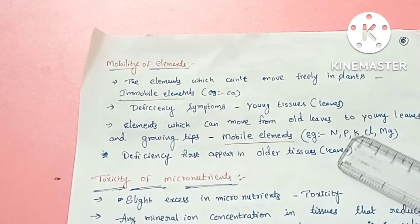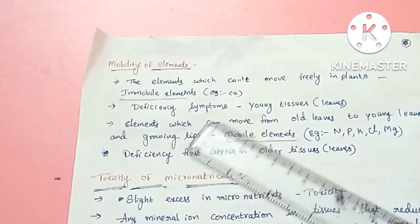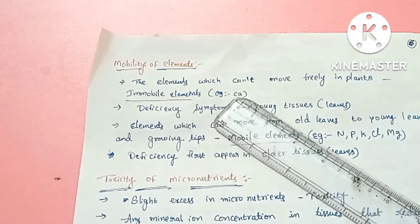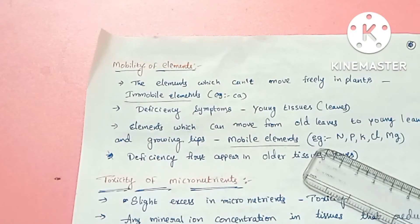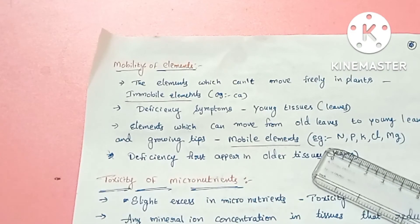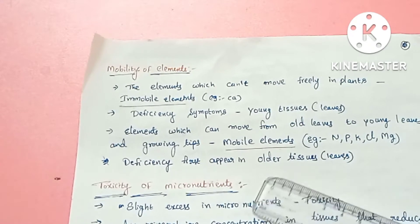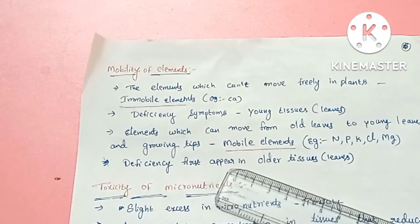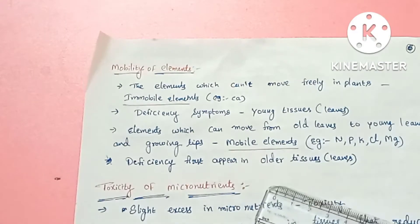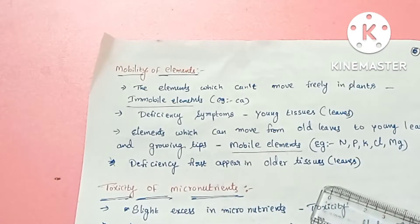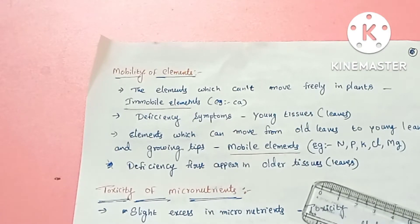Elements that move from older senescing parts to young growing tips are called mobile elements. For example, mobile elements include nitrogen, phosphorus, potassium, chlorine, and magnesium. Deficiency symptoms of mobile elements first appear in older tissues, particularly older leaves, because those elements are already relocated to younger parts.